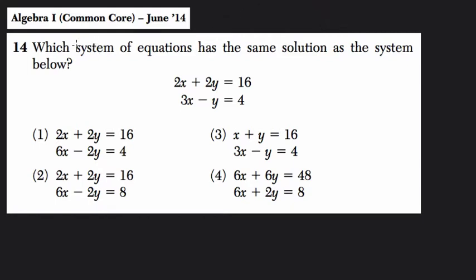Okay, let's start by reading this question. It says, which system of equations, a system of equations of course is a group of equations, so here we have two equations we call that a system, has the same solution as the system below. So they're saying, out of these four choices, which one has the same solution set as this system right here?